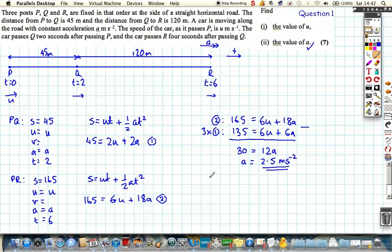So let's substitute it back into one because that looks the easiest. And what do we get? We get 45 is equal to 2u plus 5. So we know, rearranging, that we know that u must be 20 m/s.